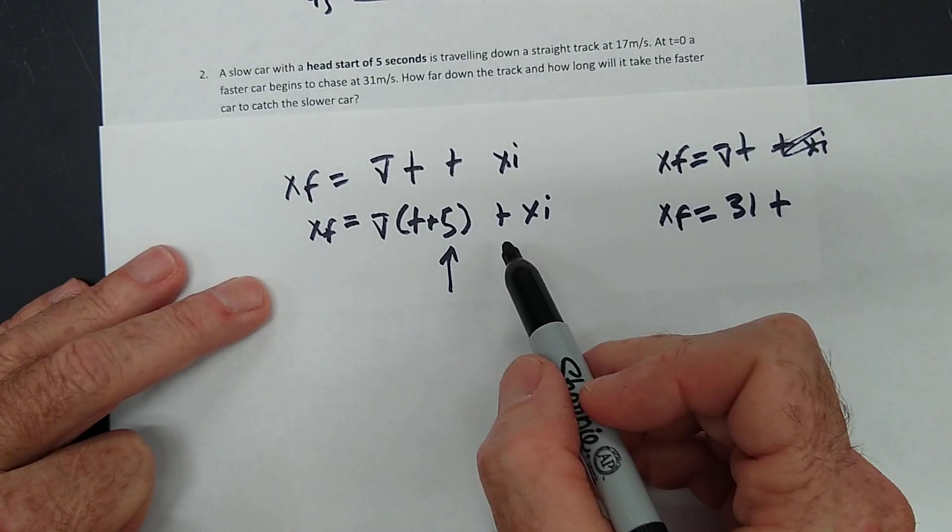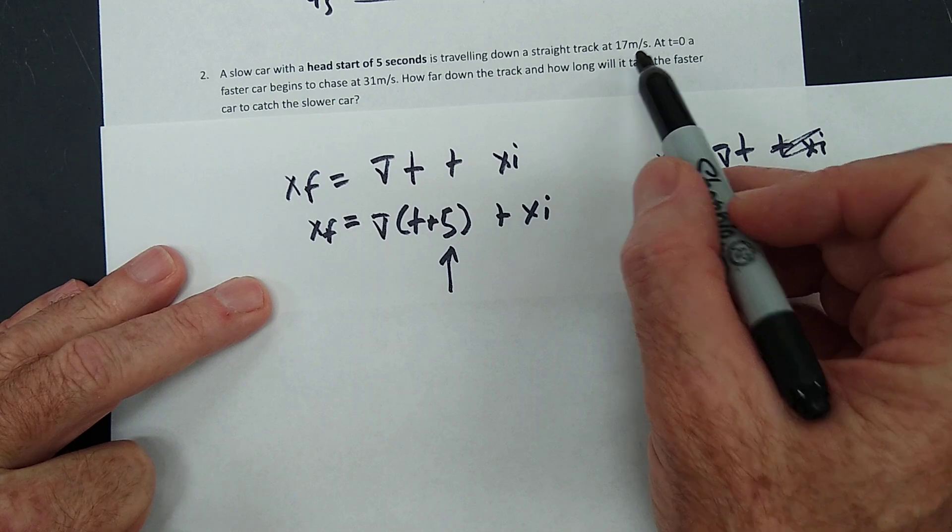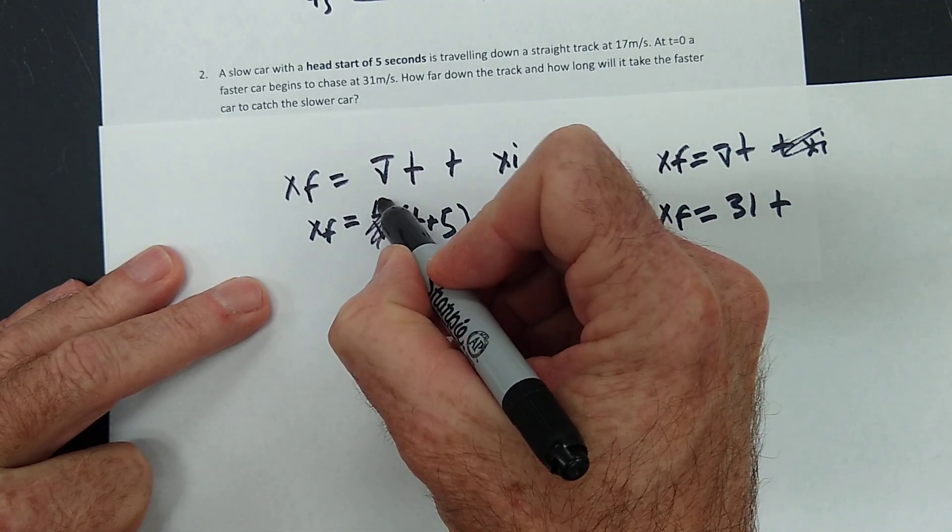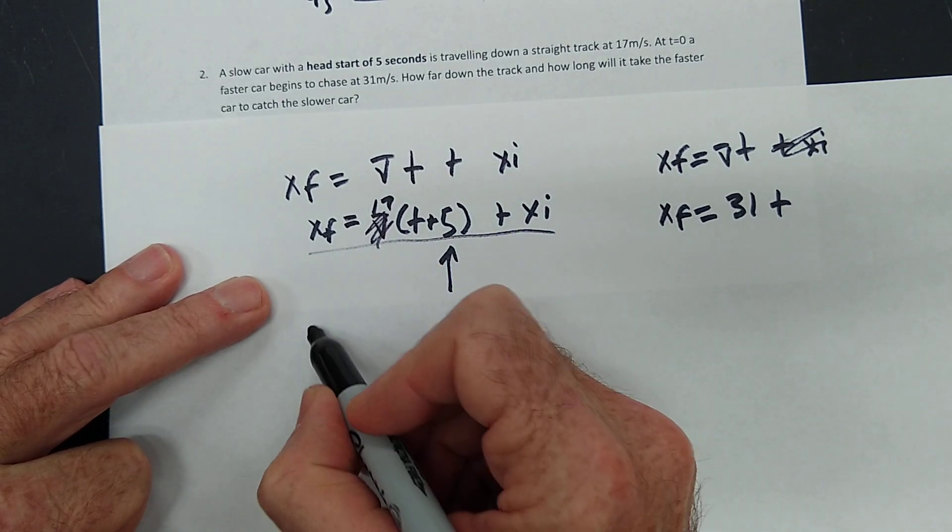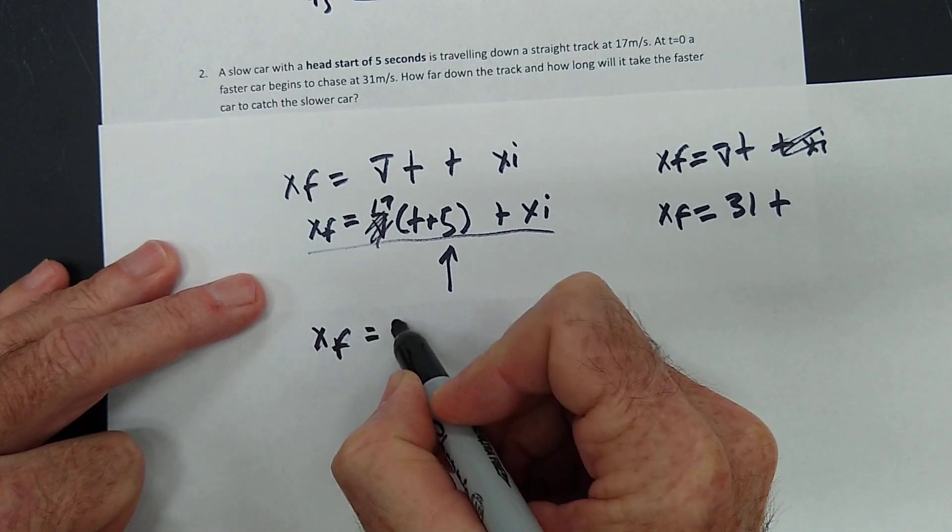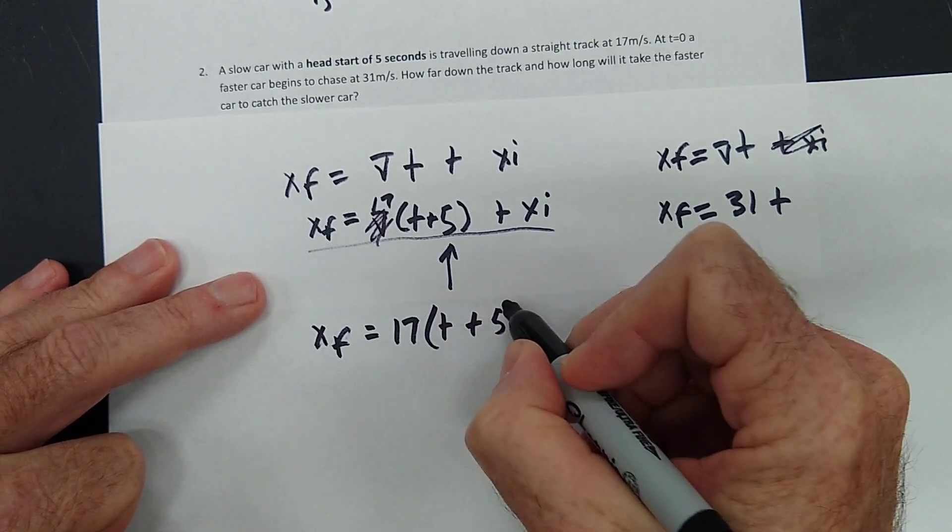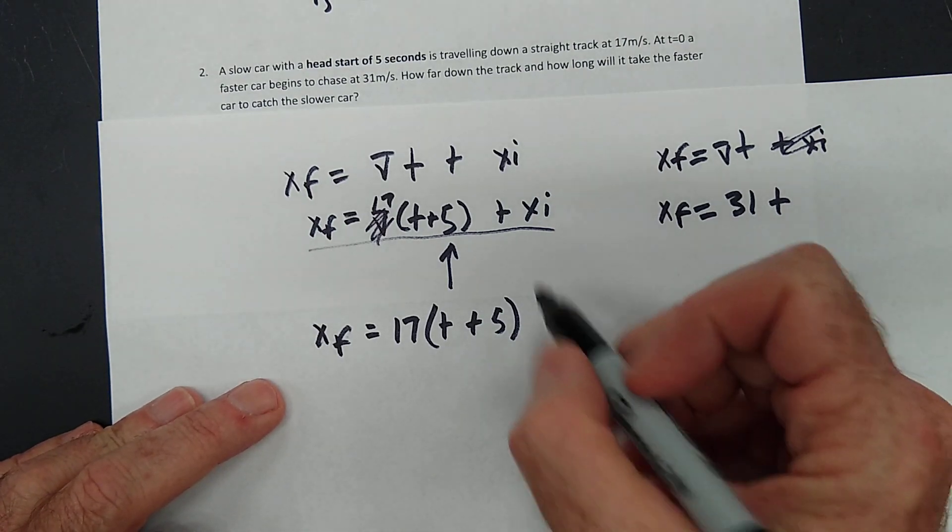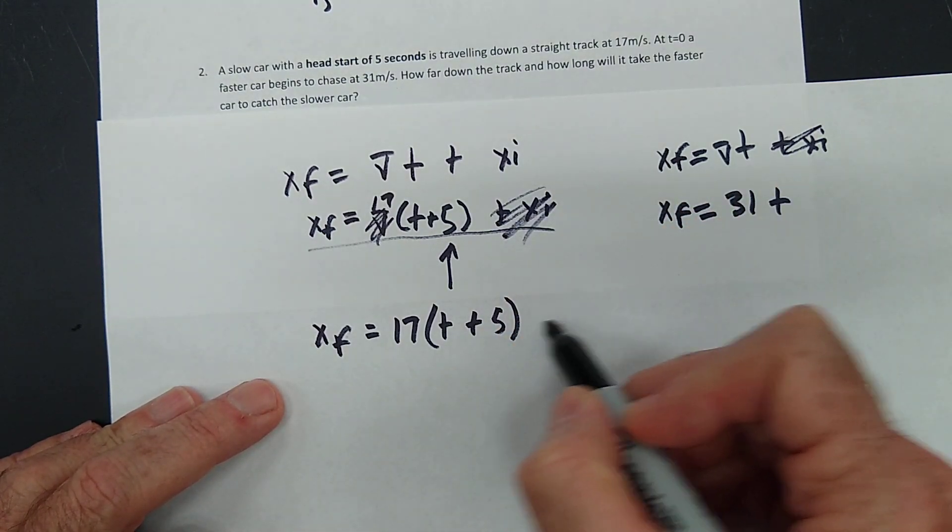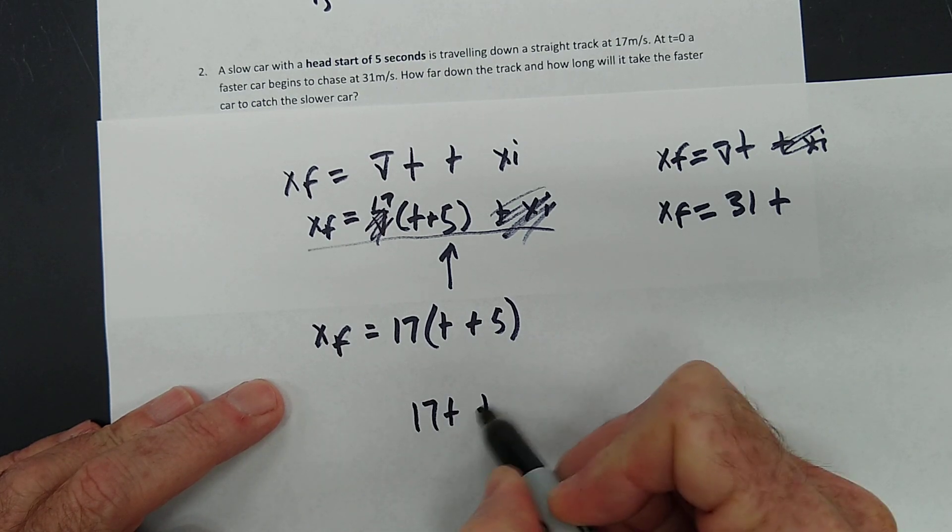So let's write now, what was the velocity of the slow car? 17. So what are we going to do with this equation for the slow car? Its velocity is equal to 17 times T plus 5. Now look, you have to distribute the T plus 5 out. Plus it doesn't have a head start, so there's nothing else. 17 T plus 85.